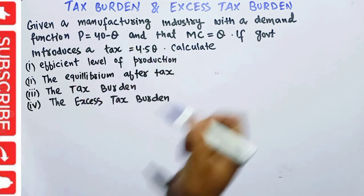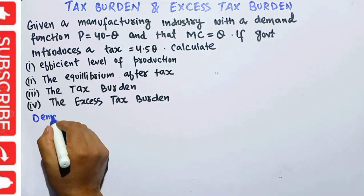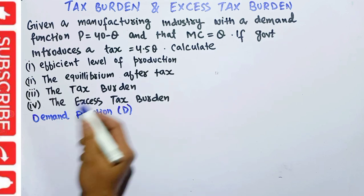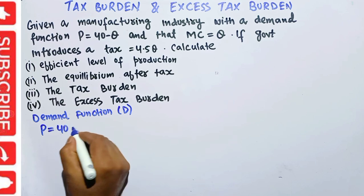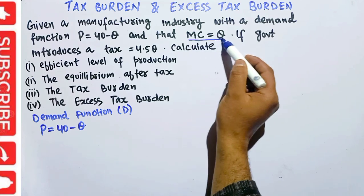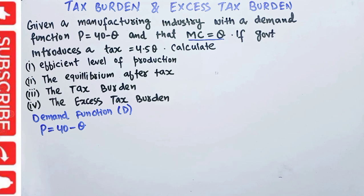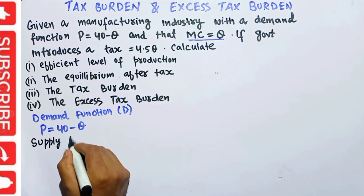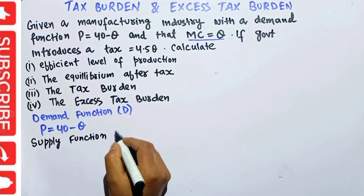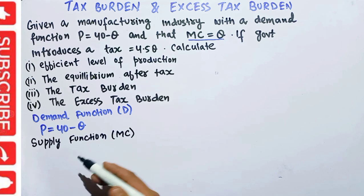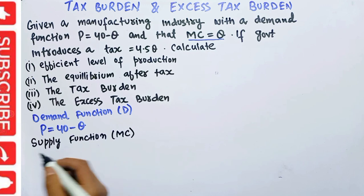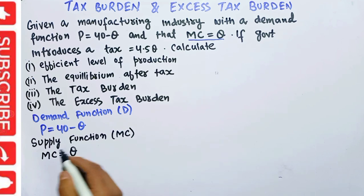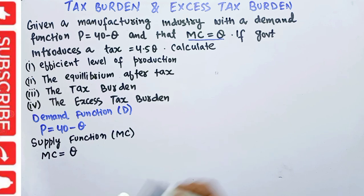So what we are given: the demand function is P = 40 - Q. We are told that marginal cost is Q. The supply function is nothing but the marginal cost, so our supply function is P = Q. This is our supply function.